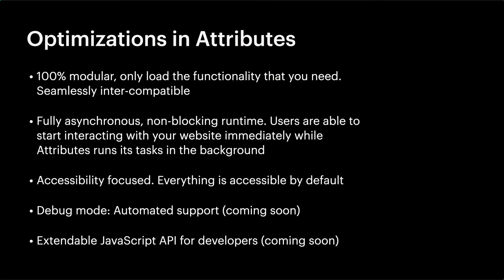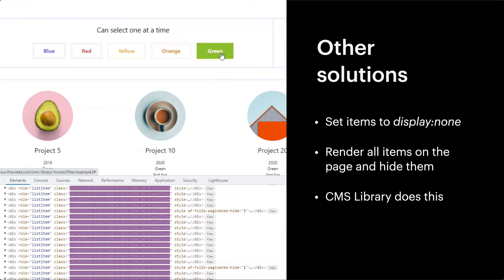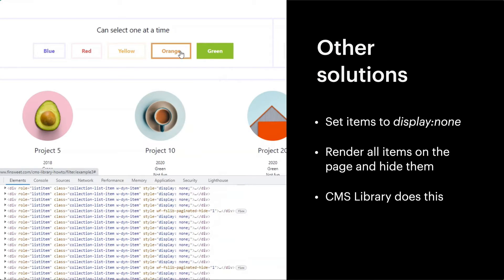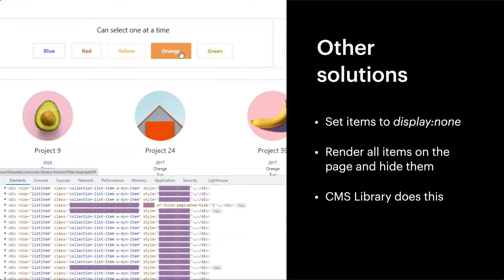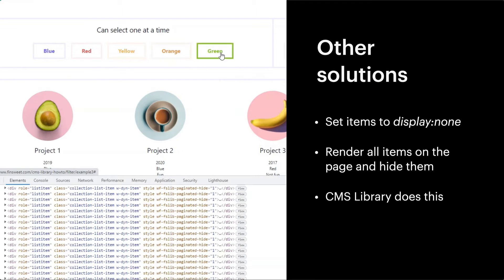This allows Attributes to work as the base for any custom code-based solution required in Webflow. We're getting more serious about the quality of product that we deliver to you. We're dedicated to giving you the best technical solutions in Webflow. And our biggest upgrade is the improvement in CMS data filtering. Attributes CMS filter manages your filter data like no other solution in Webflow. Most filter solutions will render all items on the page and then set display none to items that are not visible in the list — CMS library does this as well. Let's watch this example: all items are on the page, and as I filter, all of the items remain there and their display changes.